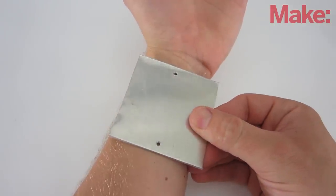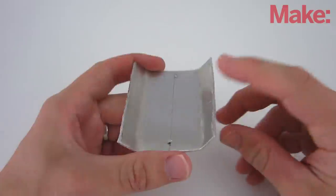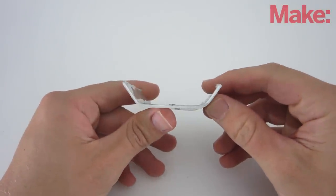Next, we need to bend the plate so that it roughly matches the contour of your wrist. I just used a pair of pliers to bend the two ends up.